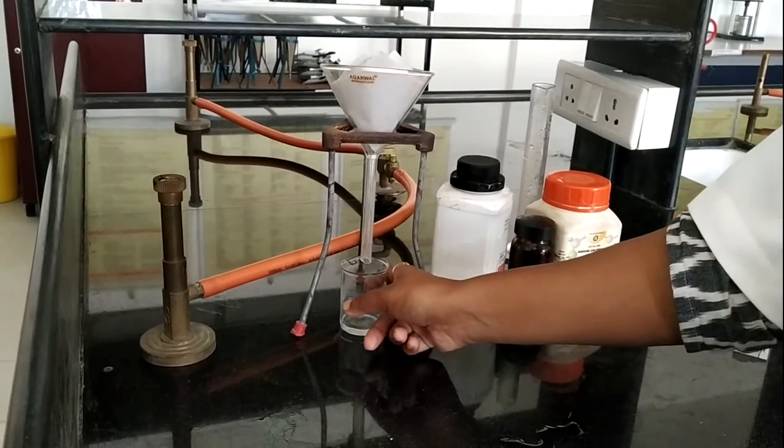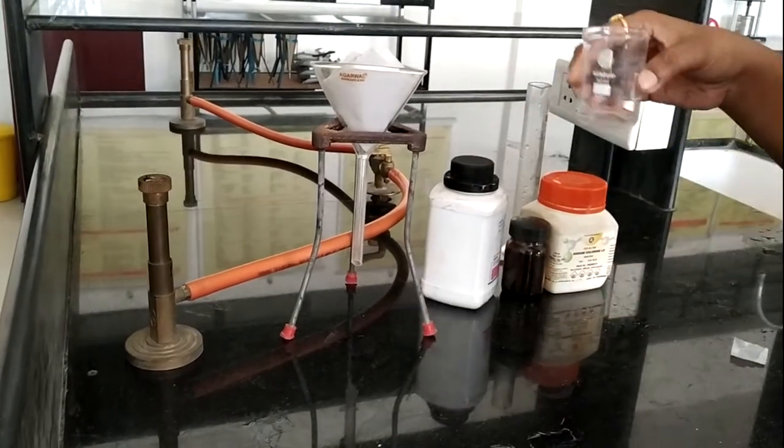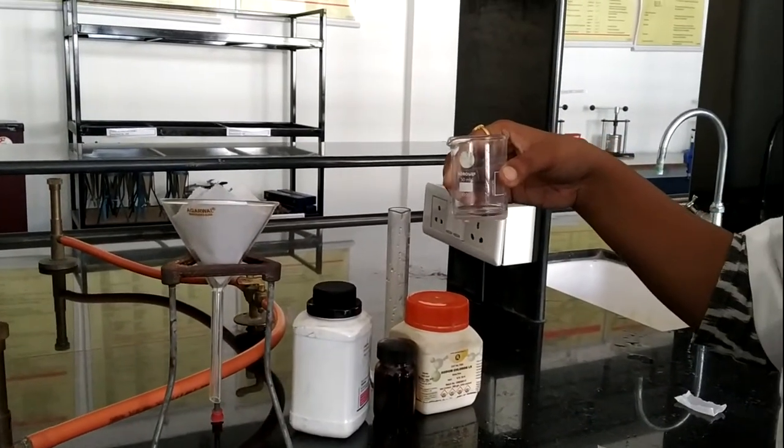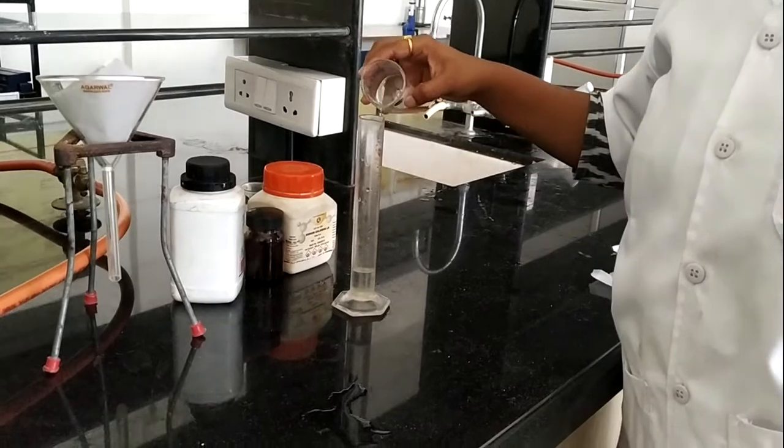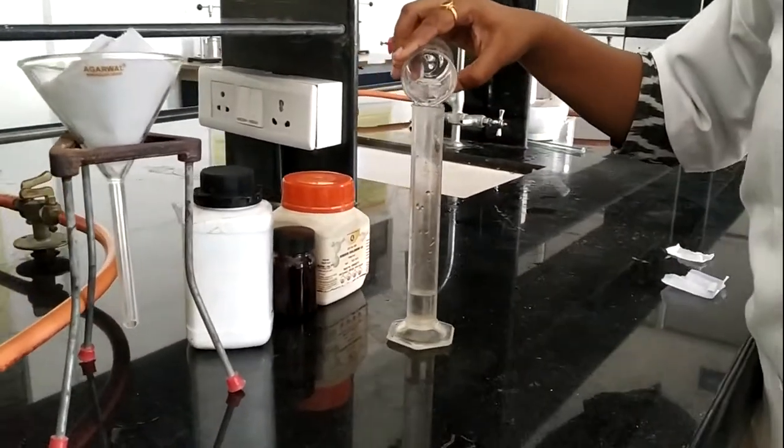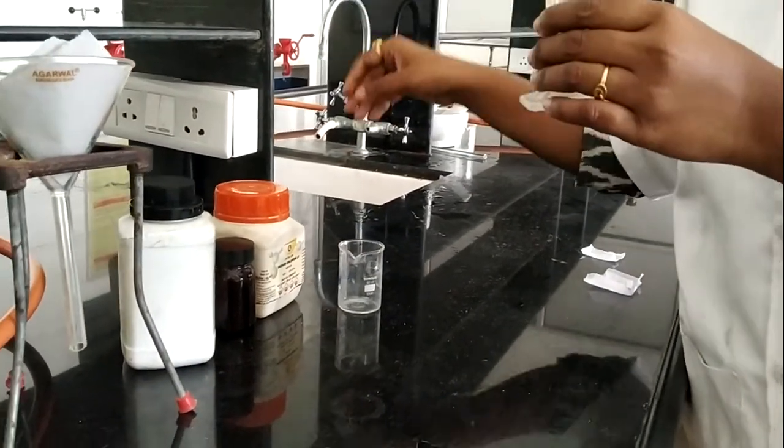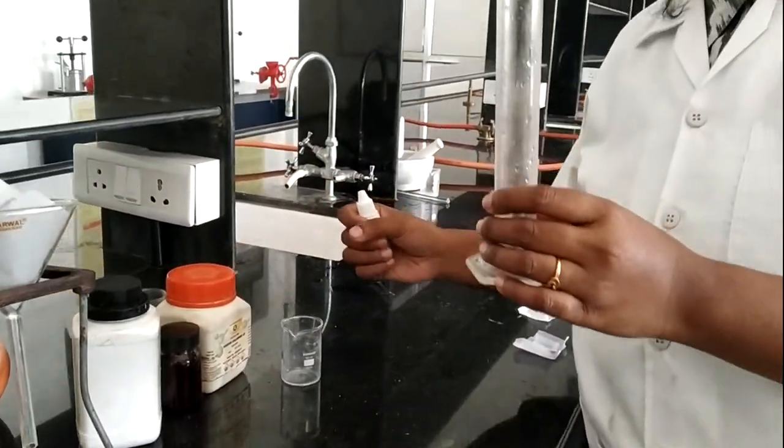After filtration, our filtrate is ready. Now let's proceed for volume makeup, and then we will pour it into container. Now make up the volume up to 10 ml into this measuring cylinder, and then we are going to pour this formulation into this bottle dropper bottle.